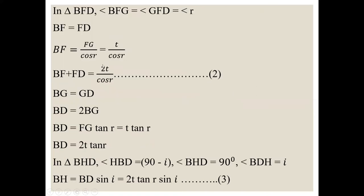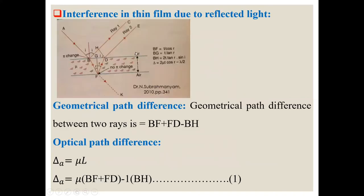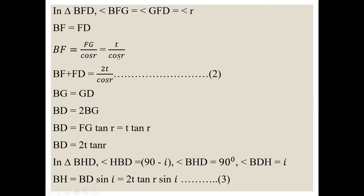So BF is equal to FG upon cos r. FG is t. FG is this t thickness of this plate. So t upon cos r. BF plus FD is equal to 2t upon cos r equation second.